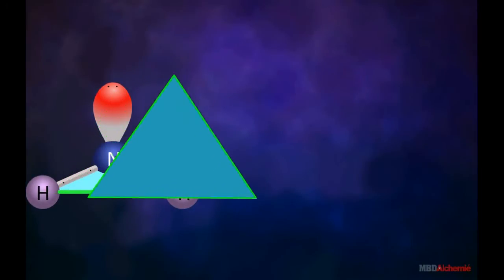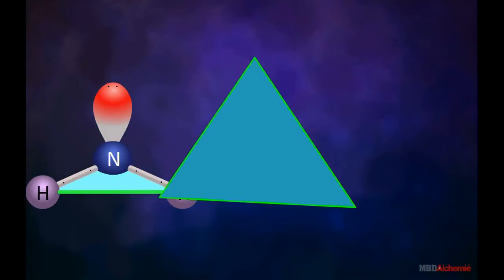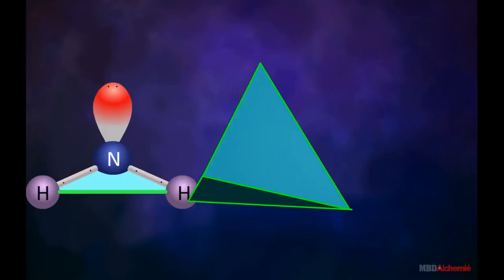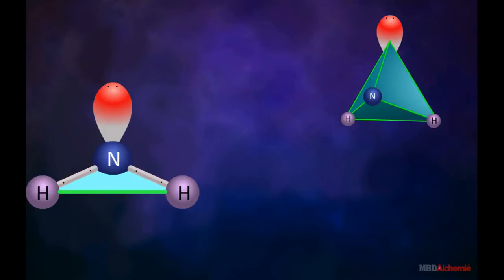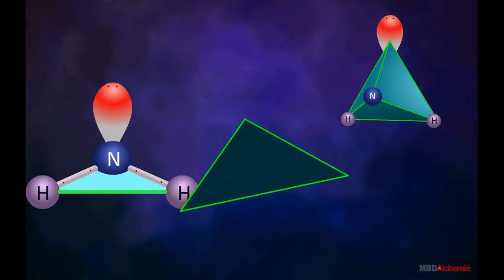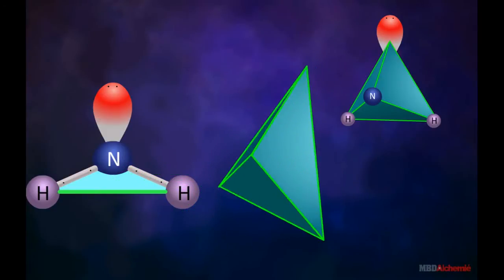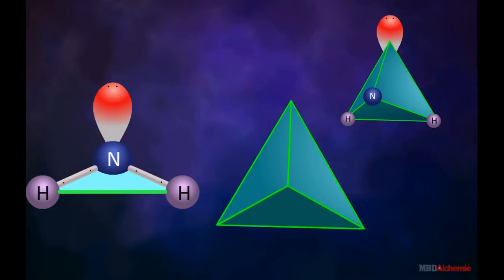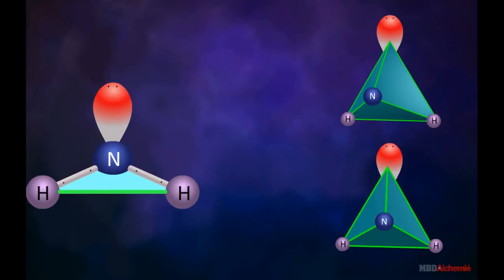As the lone pair of electrons over nitrogen atom is flatter and occupies more space around nitrogen atom, the force of repulsion between this lone pair of electrons and bond pair of electrons is greater than the repulsive forces that exist between the bond pair of electrons in ammonia molecule.